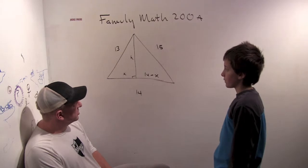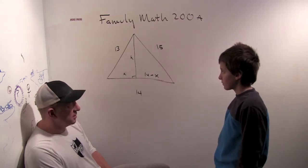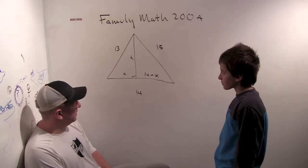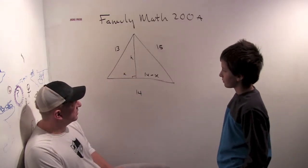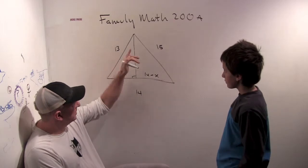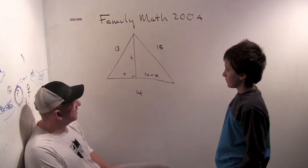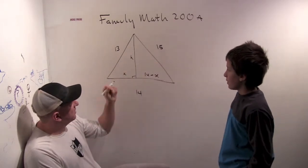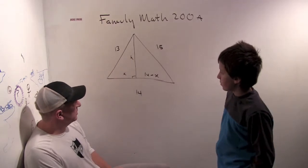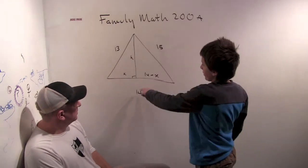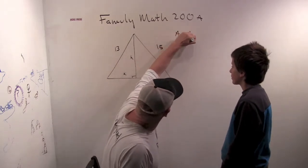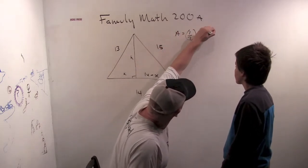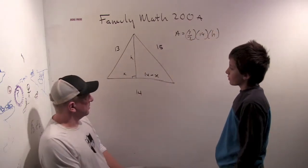We're going to find a neat relationship between x and h here to help us solve for what x and h are, and then help us find the area of the triangle. Because what is the area of the 13, 14, 15 triangle going to be once I have solved for x and h? It's 1 half times 14 times h. So the area is 1/2 times 14 times whatever h is.